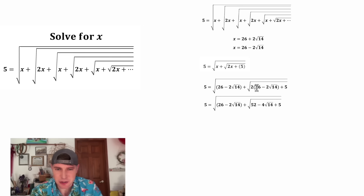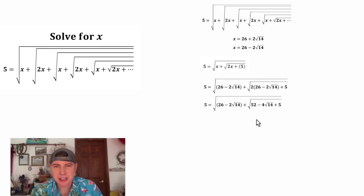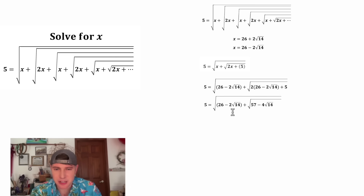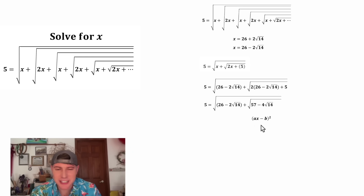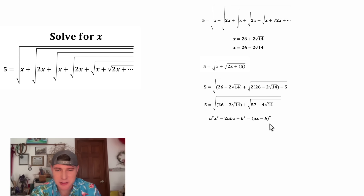Here's the first step for verifying x equals 26 minus 2√14. All we did was multiply 2 times (26 minus 2√14), and everything else is the same. Then we combine like terms: 52 plus 5 is 57. So now for the next step, we want to get rid of this square root so we can combine like terms. In order to get rid of this square root, we need to make the expression inside a perfect square.